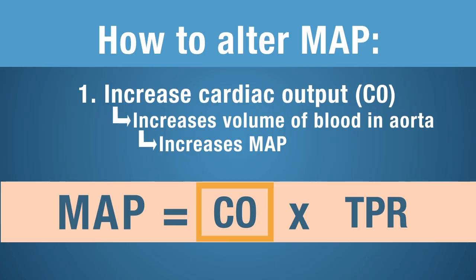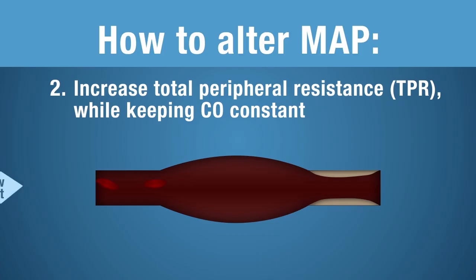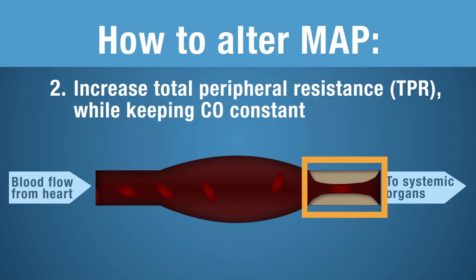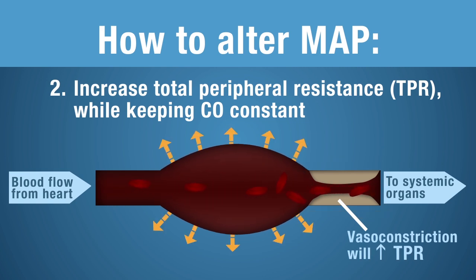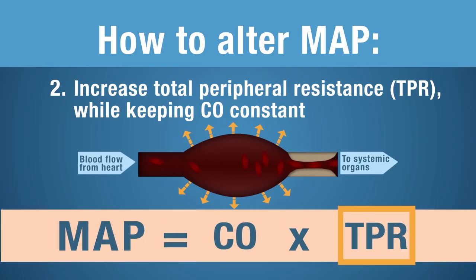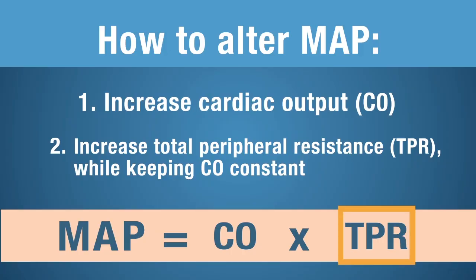Now let's try another option: changing total peripheral resistance — let's increase it while keeping cardiac output constant. With constant cardiac output, we are going to vasoconstrict the arterioles. This vasoconstriction is going to increase total peripheral resistance. Remember, total peripheral resistance is the resistance across all of your arterioles at one time. So increasing total peripheral resistance is going to increase MAP. That gives us two ways to increase MAP: increase cardiac output, or increase total peripheral resistance.